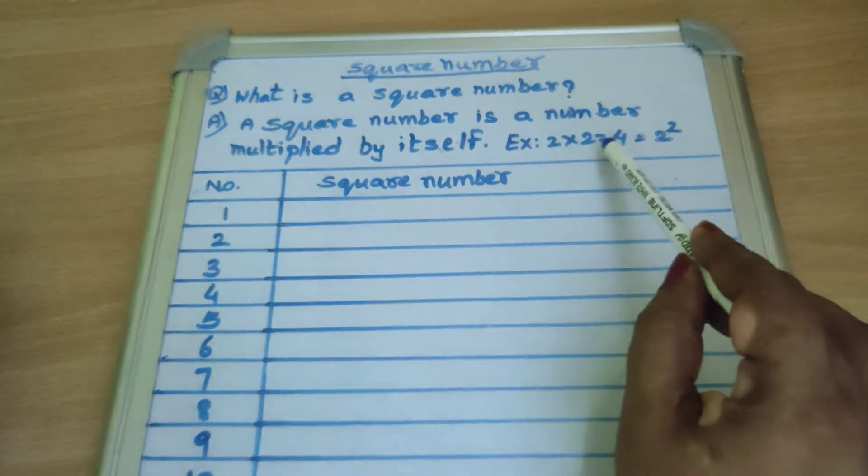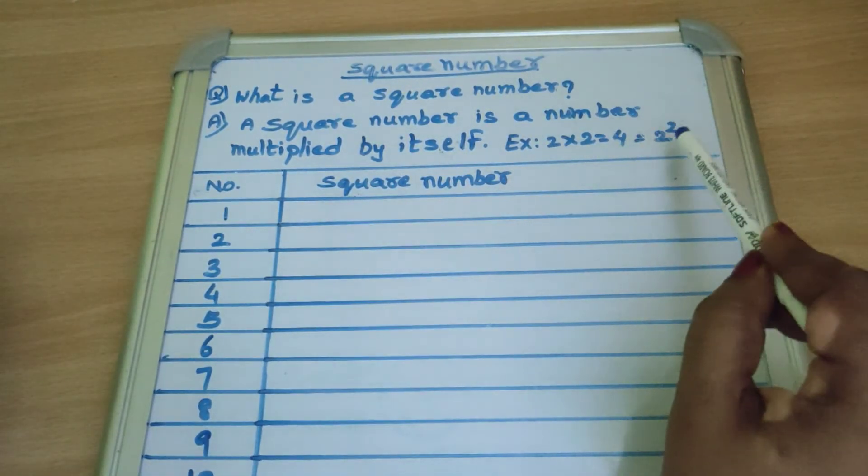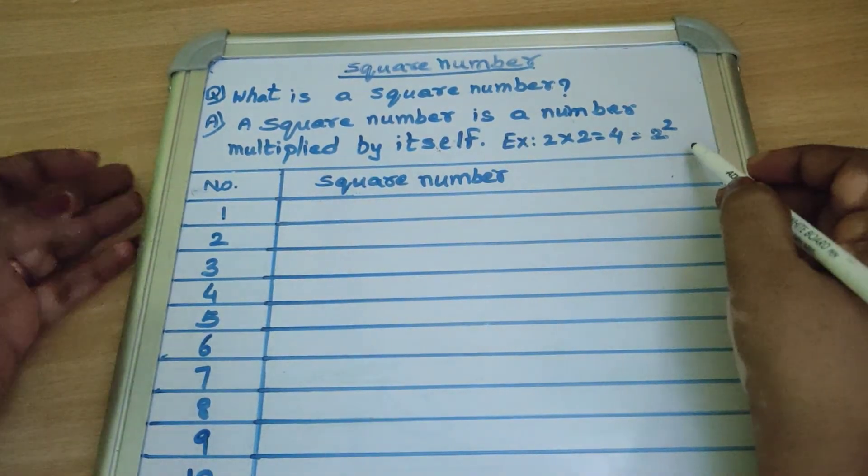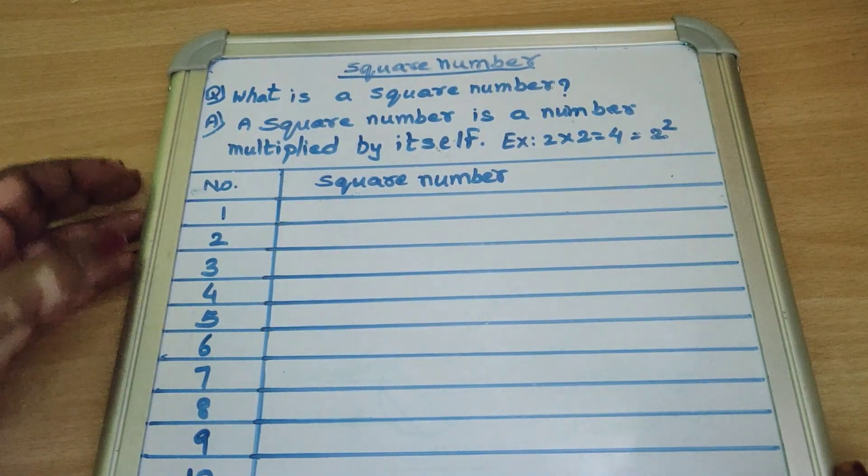Example, 2 into 2 equal to 4. We write as 2 square. Let's see.